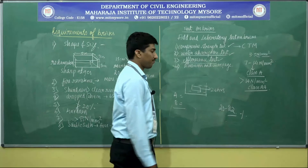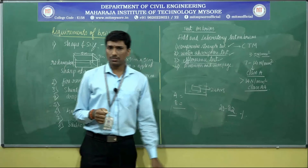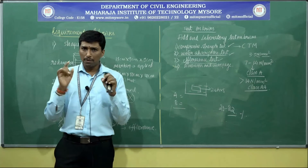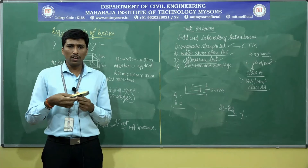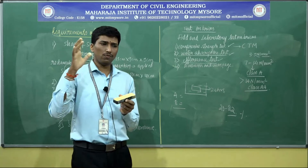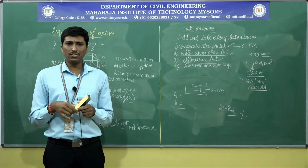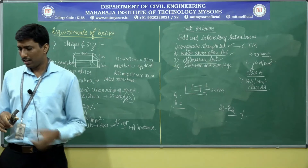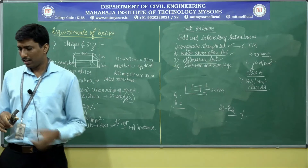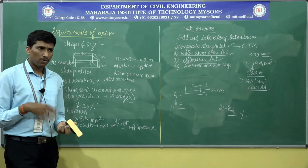Efflorescence test: a salt solution is prepared and the brick is immersed to check whether any white patches form, whether in acid or alkaline solution, leading to a salty appearance. If this persists, the brick is said to be efflorescent. The efflorescence should not be more than 50% — in worst-case conditions, if more than 50%, the brick cannot be used.